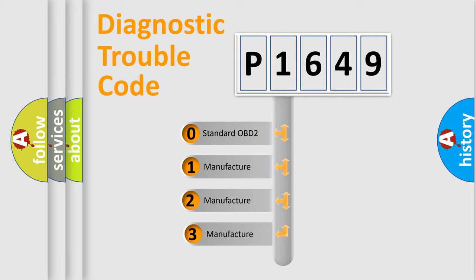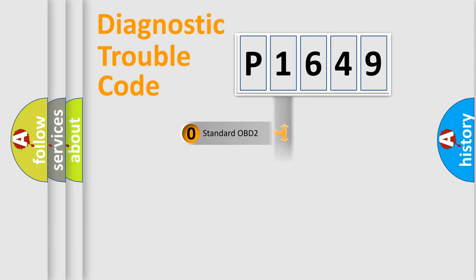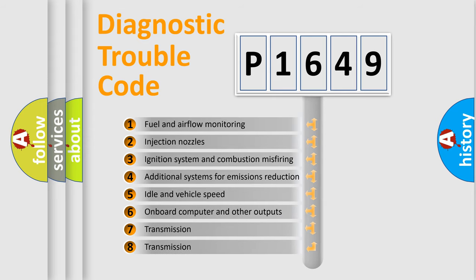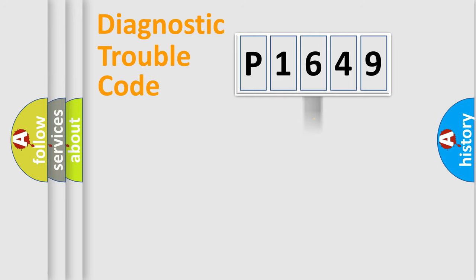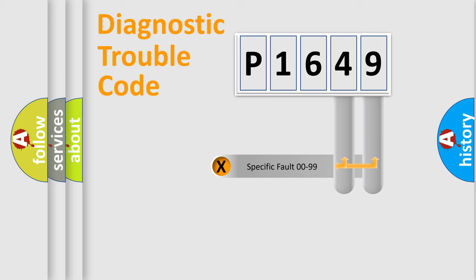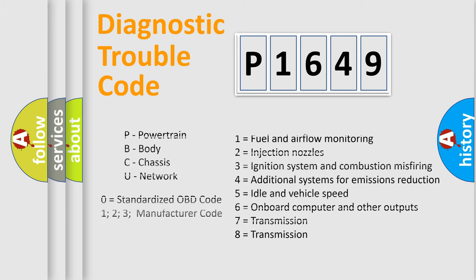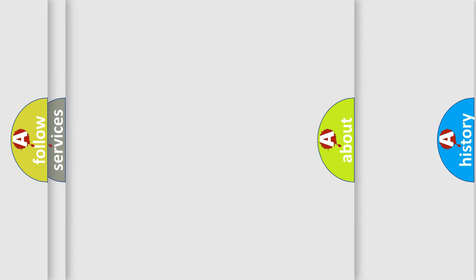If the second character is expressed as zero, it is a standardized error. In the case of numbers 1, 2, or 3, it is a manufacturer-specific error expression. The third character specifies a subset of errors. This division is valid only for the standardized DTC code, and only the last two characters define the specific fault of the group — but only when the second character is zero.